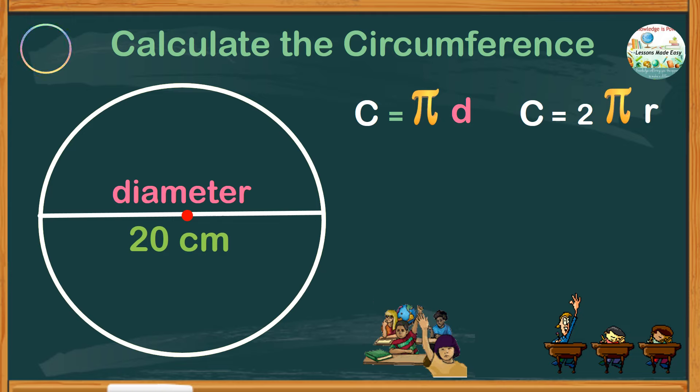Which one of these should you use? For this problem, it is reasonable to use C equals pi d, since the given measurement is the diameter.